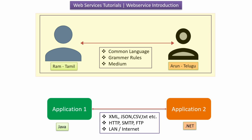Here you can see two people, Ram and Arun. Ram speaks Tamil and Arun speaks Telugu. For them to communicate effectively, they need a common language like English, common grammar rules, and a medium like speaking or writing.